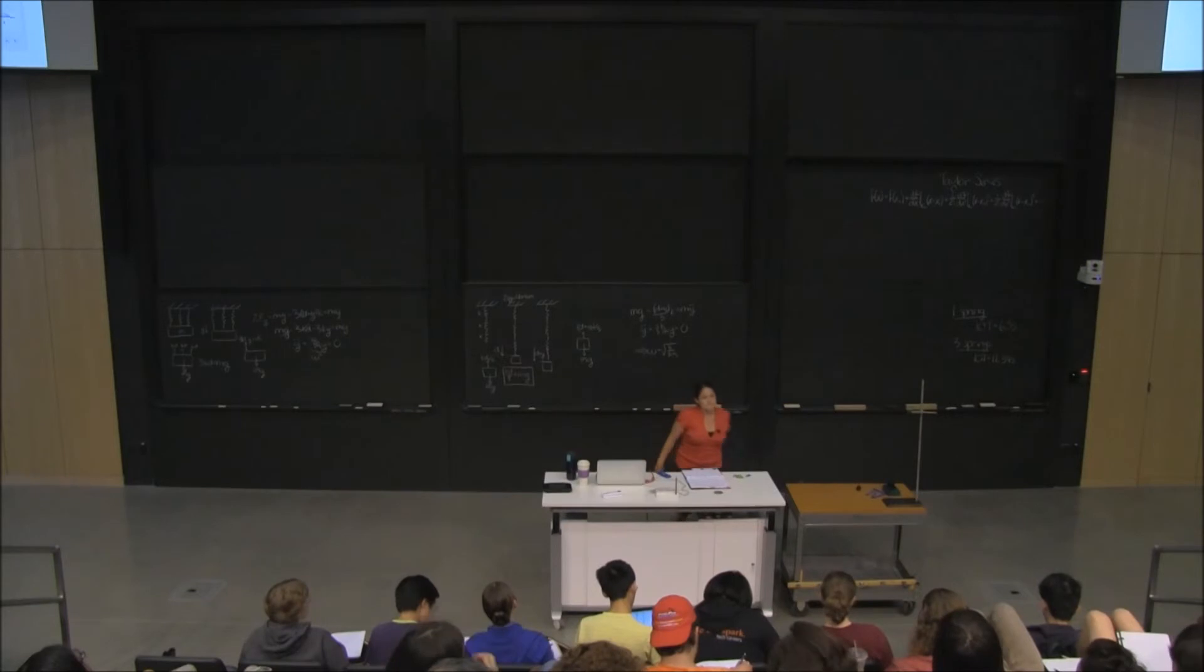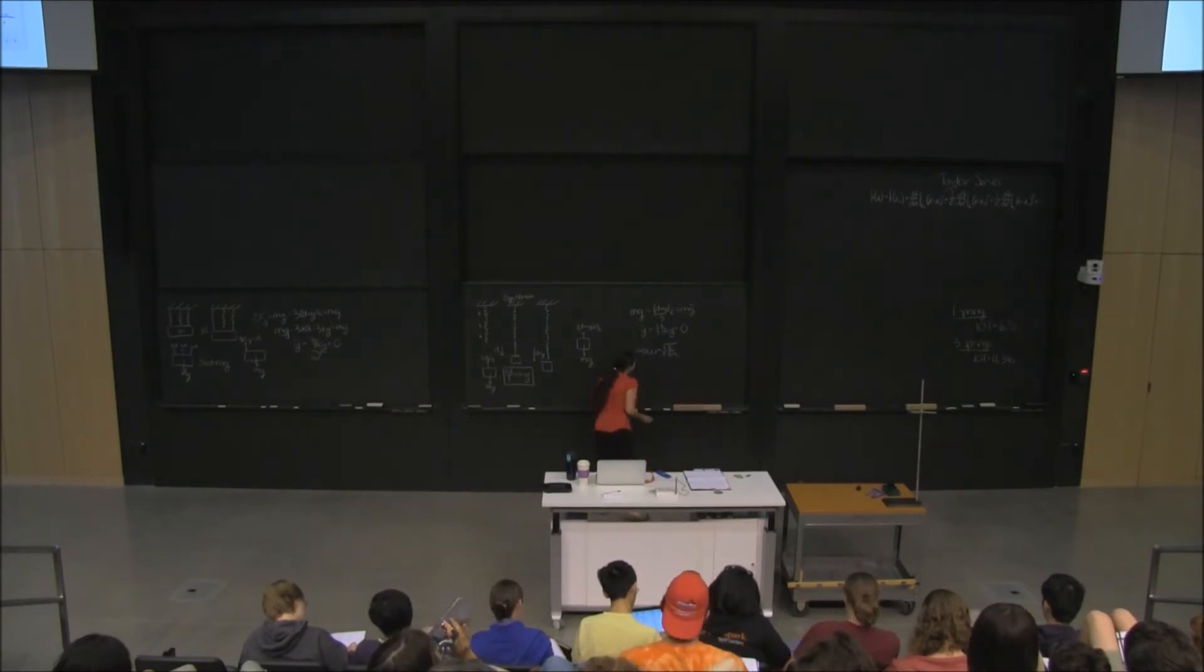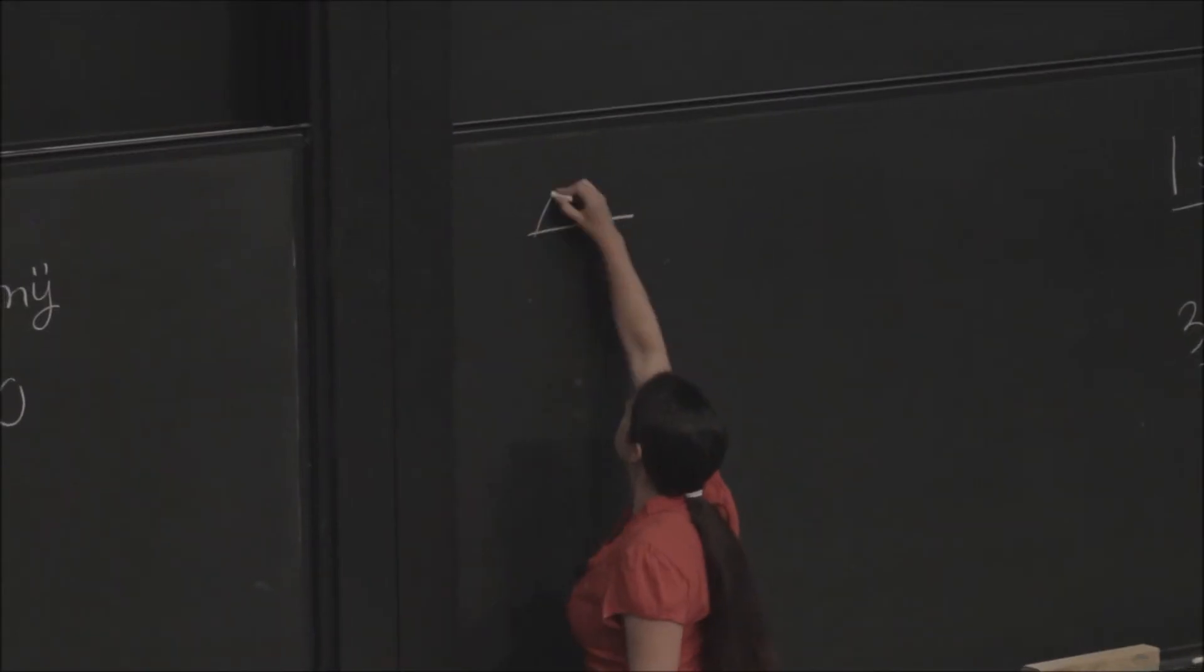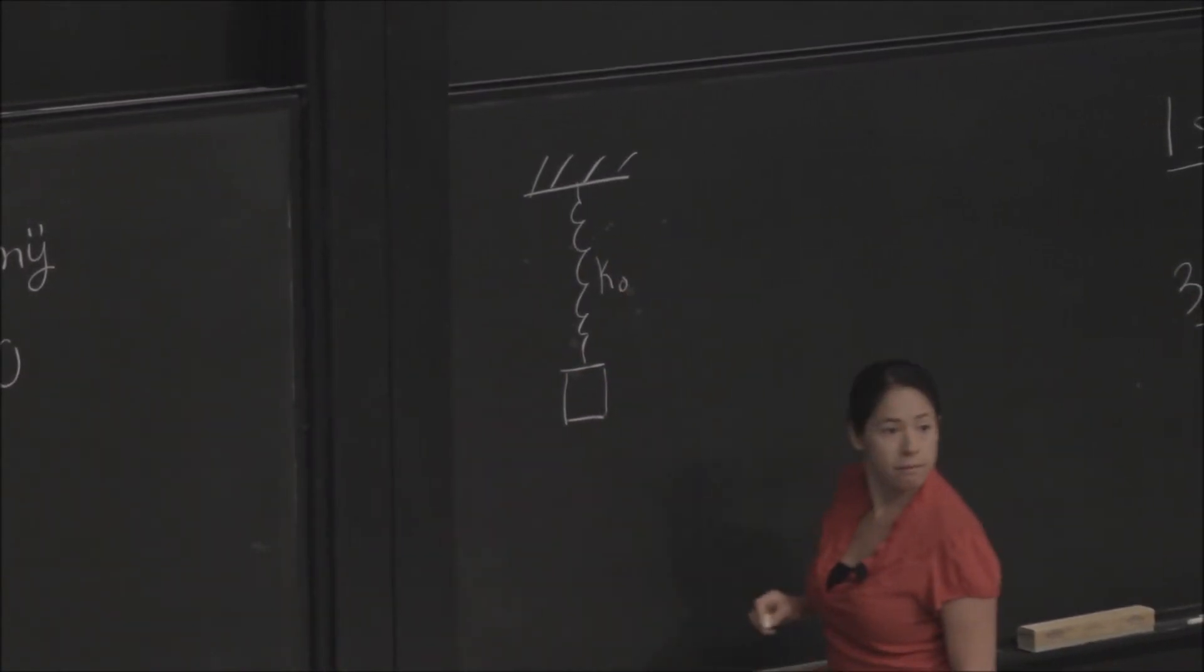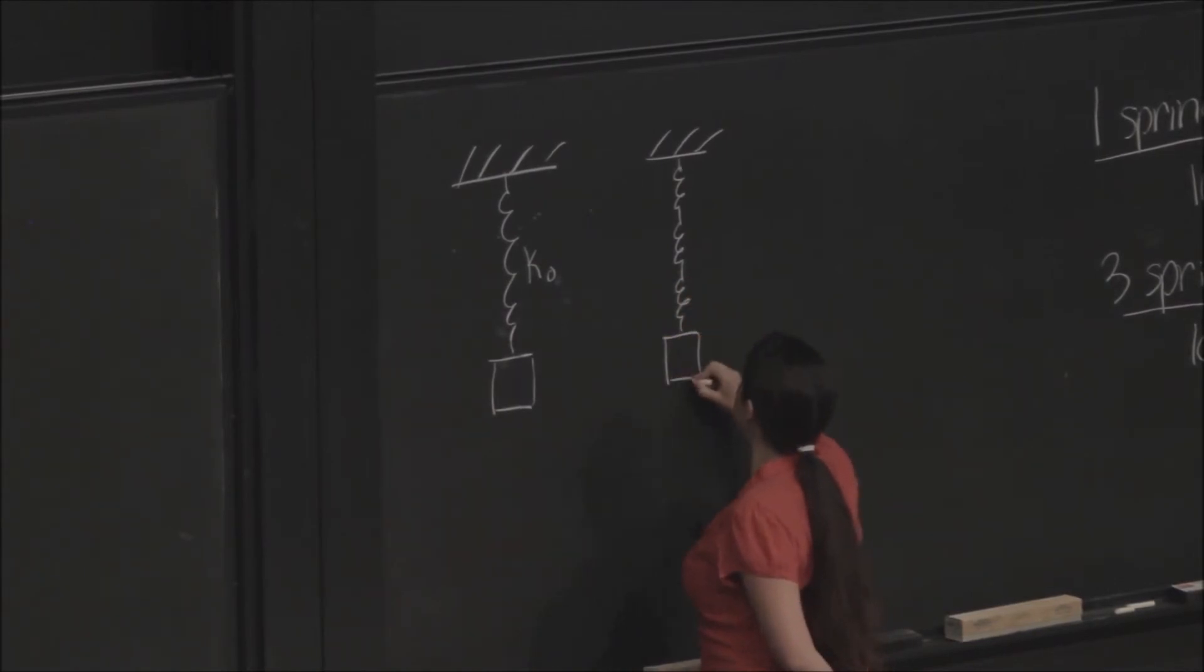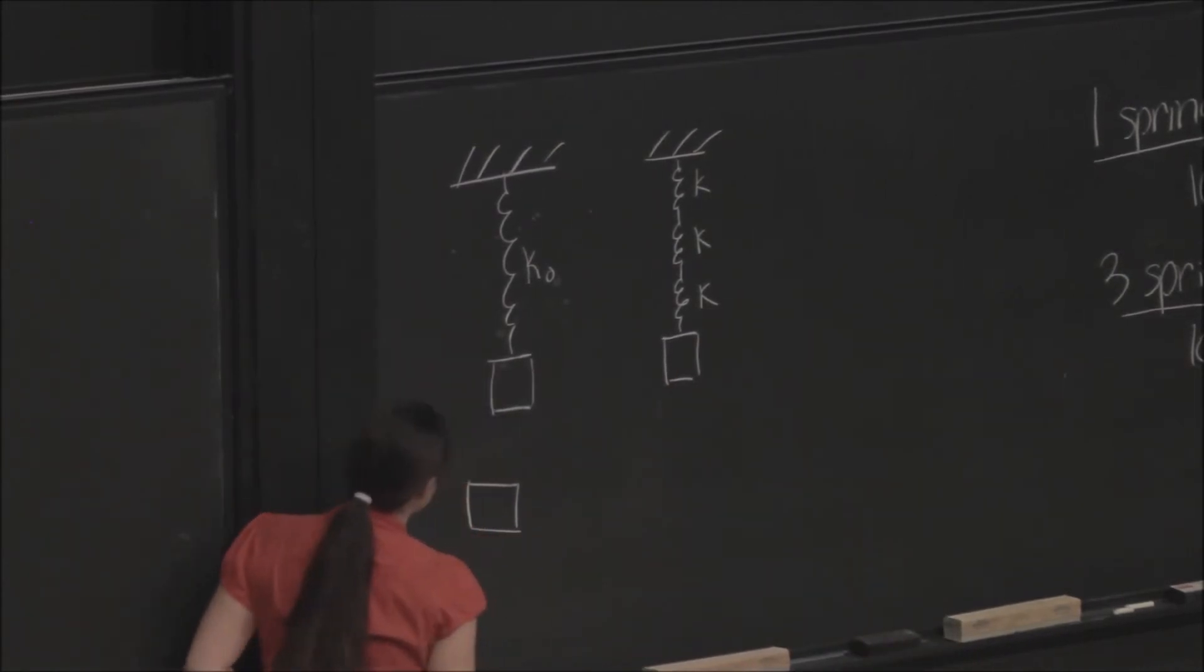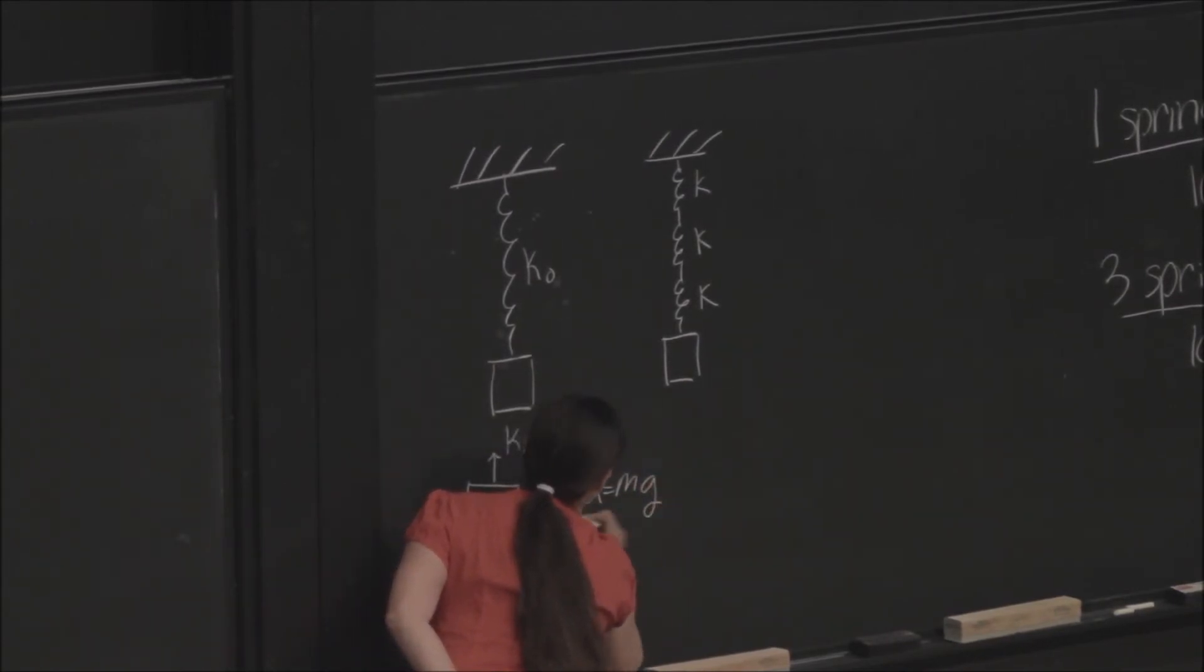Yeah? Could it be helpful to, like, think of it as one big spring with one third? Yes, you can. So, in fact, if you were to think of it as one big spring, let's see, we can do that real quick. OK. So, if you have one big spring with some spring constant K naught, and now you have, and let's compare it to the 3-spring system with spring constant K,